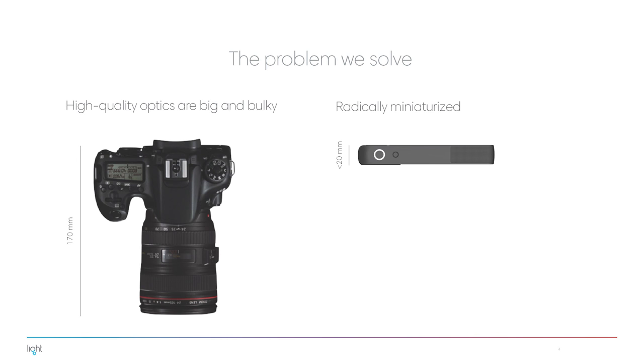What we're essentially doing is solving the problem of high quality optics by miniaturizing it — basically putting SLR quality cameras into mobile form factor devices, so people can take them with them. Your best camera shouldn't be sitting on a shelf; it should be with you all the time. This is still the first version of the technology. The next revisions will make this smaller, and we're working with a company to put this in smartphones as well.